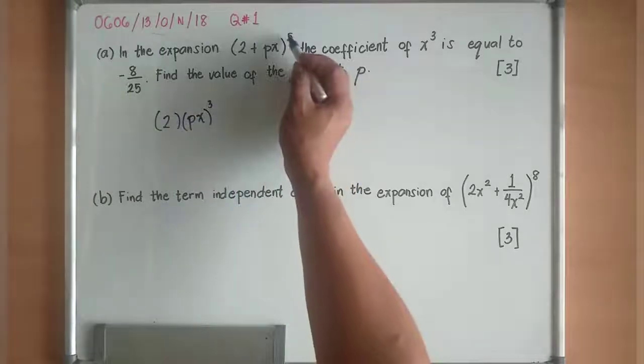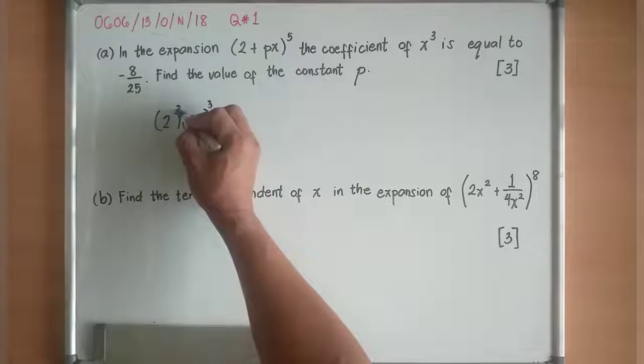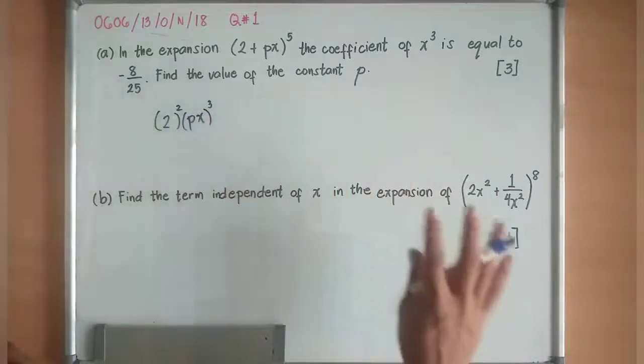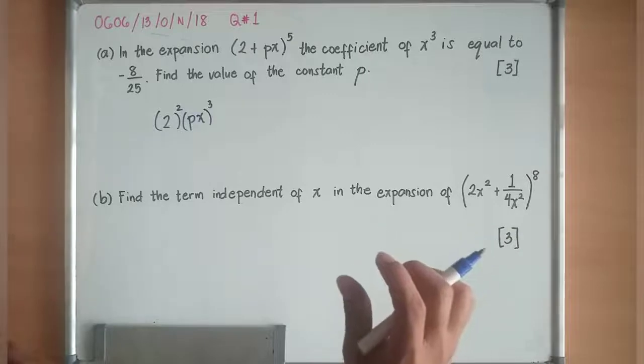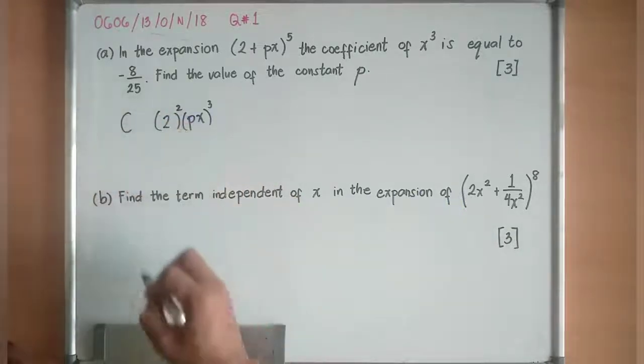So it means if I will put (Px)^3, I need to have this 2 to the power of, you see this is power of 5, so it means 5 minus 3, this is supposed to be 2. Another thing that you should know is, when we are doing binomial expansion, we are always relating it with combinations.